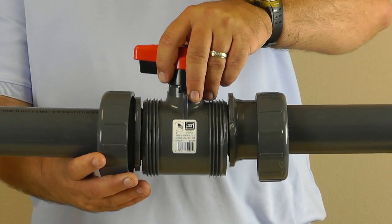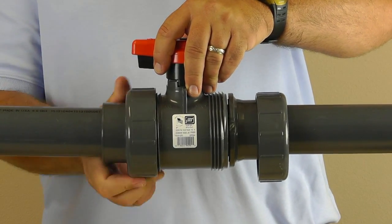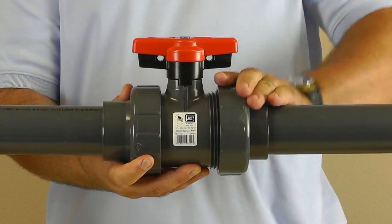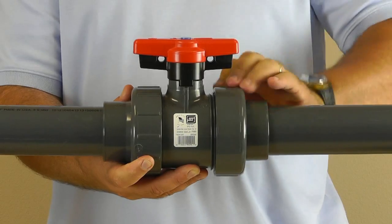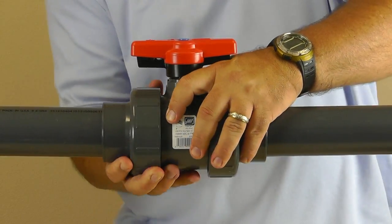Now that the valve cartridge is fully assembled, reinstall the cartridge between the two union end connectors. Attach the union nuts and hand tighten. Your installation of the 2 inch TruUnion 2000 Industrial Ball Valve Seat and O-Ring Repair Kit is now complete.